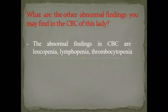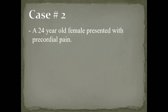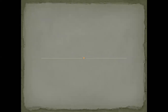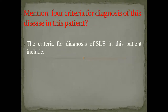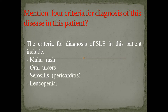Other CBC abnormalities include leukopenia, lymphopenia, and thrombocytopenia at thresholds of 3,500, 1,500, and 100,000 on two or more occasions. For case two — the 24-year-old with precordial pain — the diagnosis is most probably pericarditis with pericardial effusion as a form of serositis accompanying lupus. The diagnostic criteria in this patient include malar rash, oral ulcers, serositis/pericarditis, and leukopenia (white cell count was 3,400 — though it must be confirmed on two occasions).